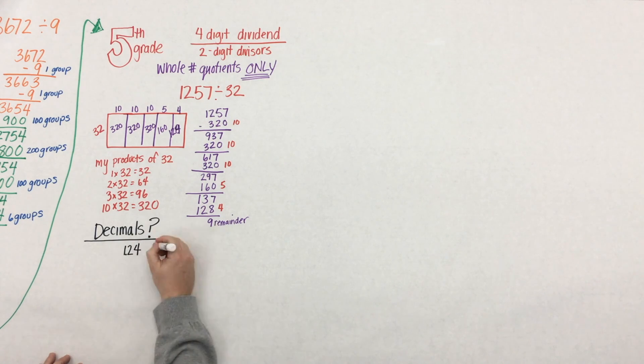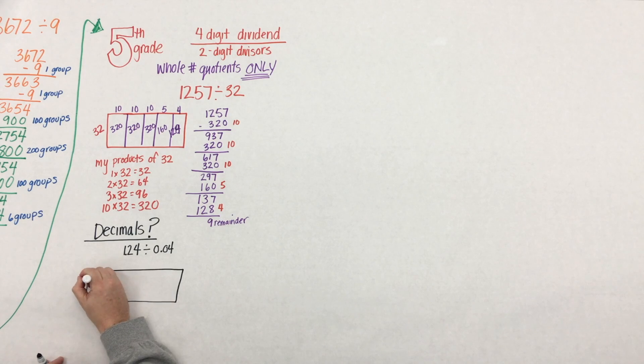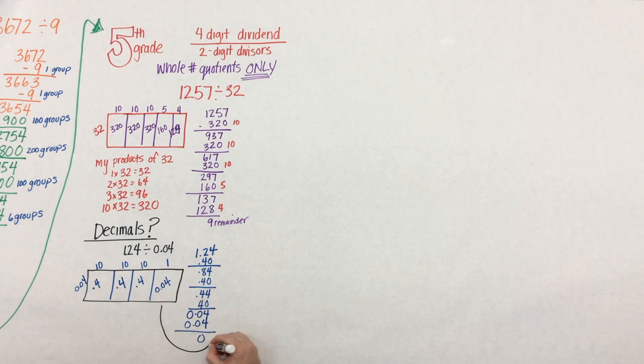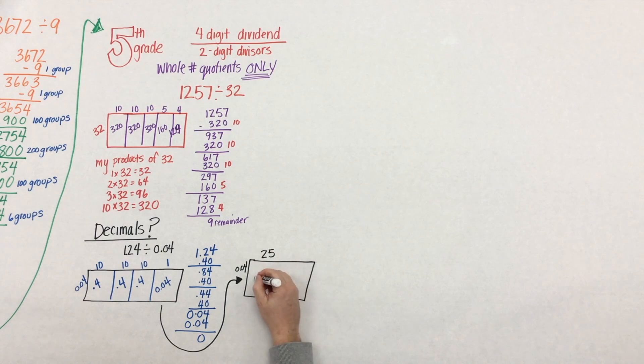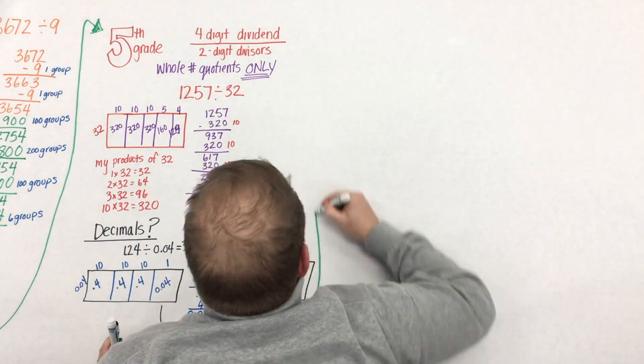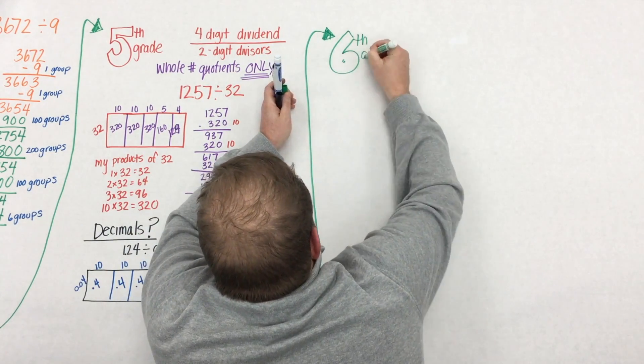Now, decimals. What about decimals? Well, this same understanding of partial quotients and area model can be applied to decimals. Here we have 1.24, and we're continually removing groups of 0.04. Connections are being made, and it's a progression, which makes it much easier for students to move between whole numbers to decimals and from decimals back to whole numbers. There's just an example. Instead of using three tens, a student might think flexibly and use 25 four hundredths.